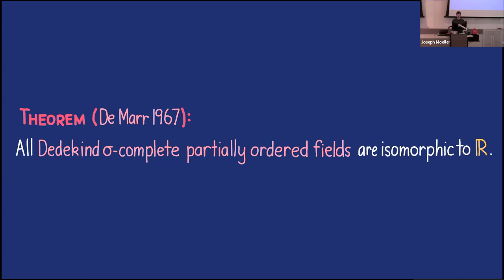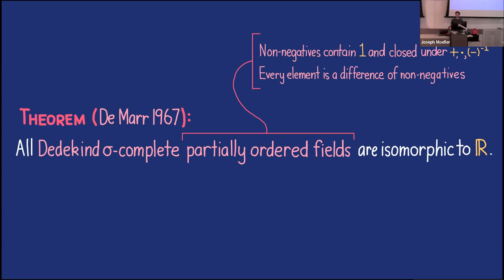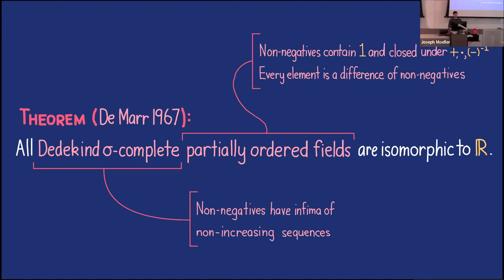The main result we appeal to instead — replacing Soler's theorem — is a result about Dedekind sigma-complete partially ordered fields, by Demar from 1967. A partially ordered field is a field equipped with a partial order where the non-negative elements contain one, are closed under addition, multiplication, and inversion, and every element is a difference of non-negatives. Dedekind sigma-completeness says that the non-negatives have infima of non-increasing sequences. This result says that any such field is isomorphic as an ordered field to the real numbers.